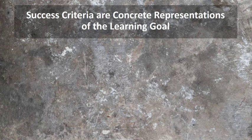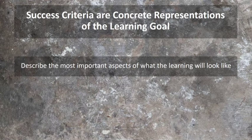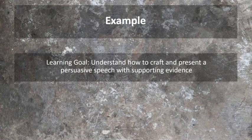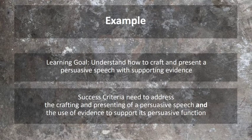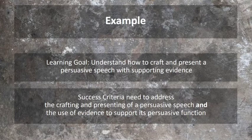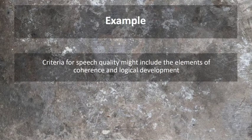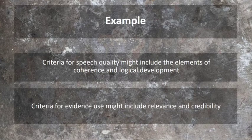Success criteria are concrete representations of the learning goals that describe the most important aspect of what the learning will look like at the end of the lesson and at points along the way. They describe specifically what students will say or do, and how well they will do it, to show that they have achieved the lesson goal. For example, if the lesson goal is to understand how to use evidence in a persuasive speech, the end-of-lesson success criteria include crafting and presenting an effective persuasive speech and using evidence as a strategy to make the speech persuasive. Additionally, the success criteria should communicate how students can reach these goals — criteria for speech quality might include coherence and logical development, while criteria for evidence might include relevance and credibility. The specific criteria would depend upon what was addressed in instruction.